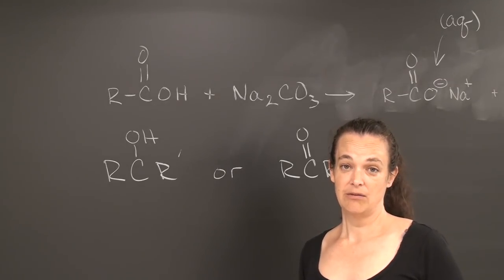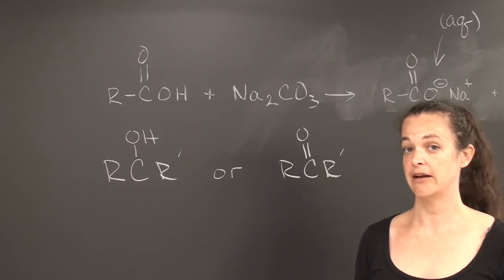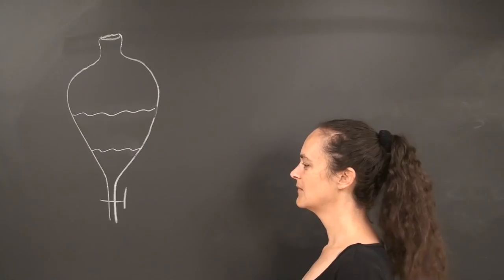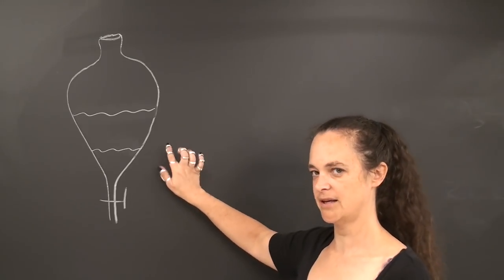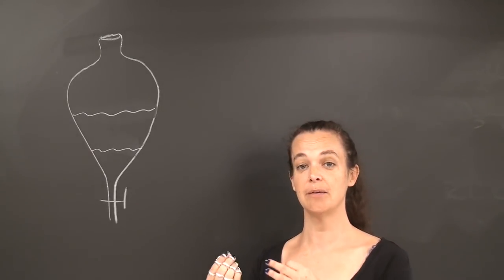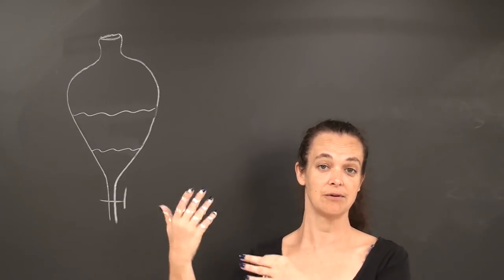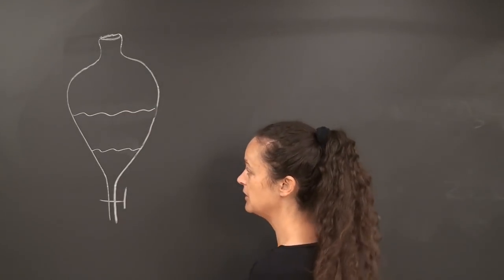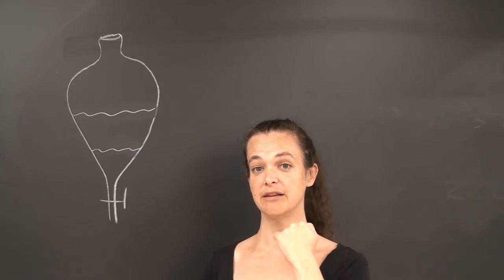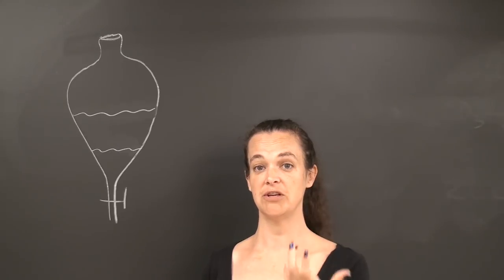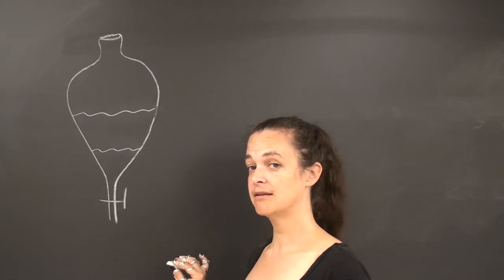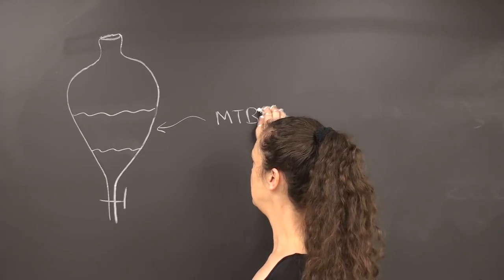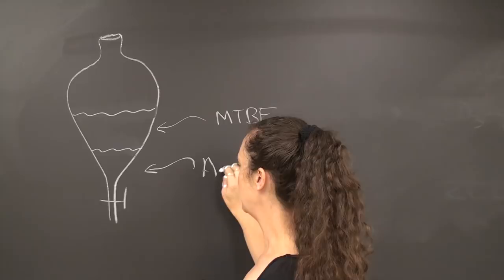A separatory funnel is a new piece of equipment, and doing an aqueous workup of this type is a new technique. A separatory funnel is used to separate two different phases: an aqueous layer and an organic layer. You are going to pour your unknown into your separatory funnel and combine it with methyl tert-butyl ether and some sodium carbonate solution. Methyl tert-butyl ether is less dense than water, so it will be the upper layer, while your aqueous layer will be the lower layer.